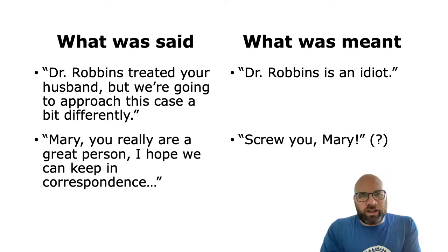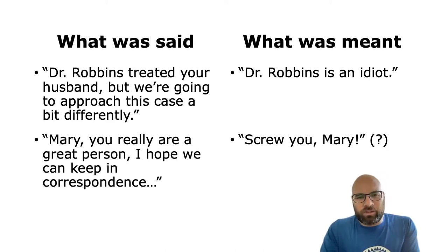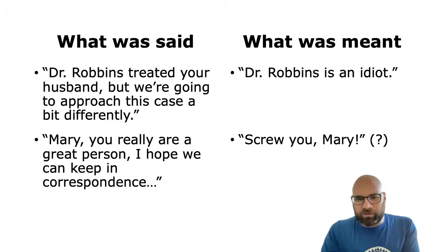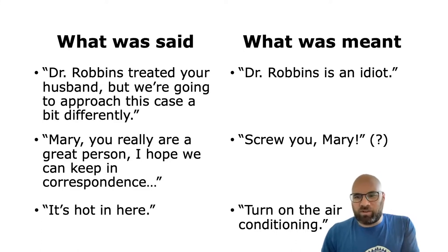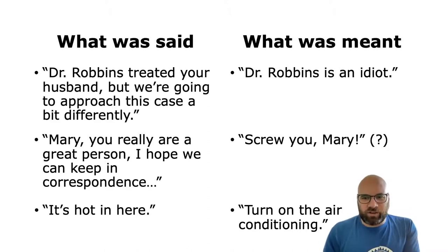These are all kind of exotic and funny examples, but we also see differences between what was said and what was meant in normal, common, everyday language. For example, if someone says 'it's hot in here,' they might actually be telling you they want you to turn on the air conditioning, turn on the fan, or open the window. So this is another example of a difference between what a person literally said versus what they actually meant.